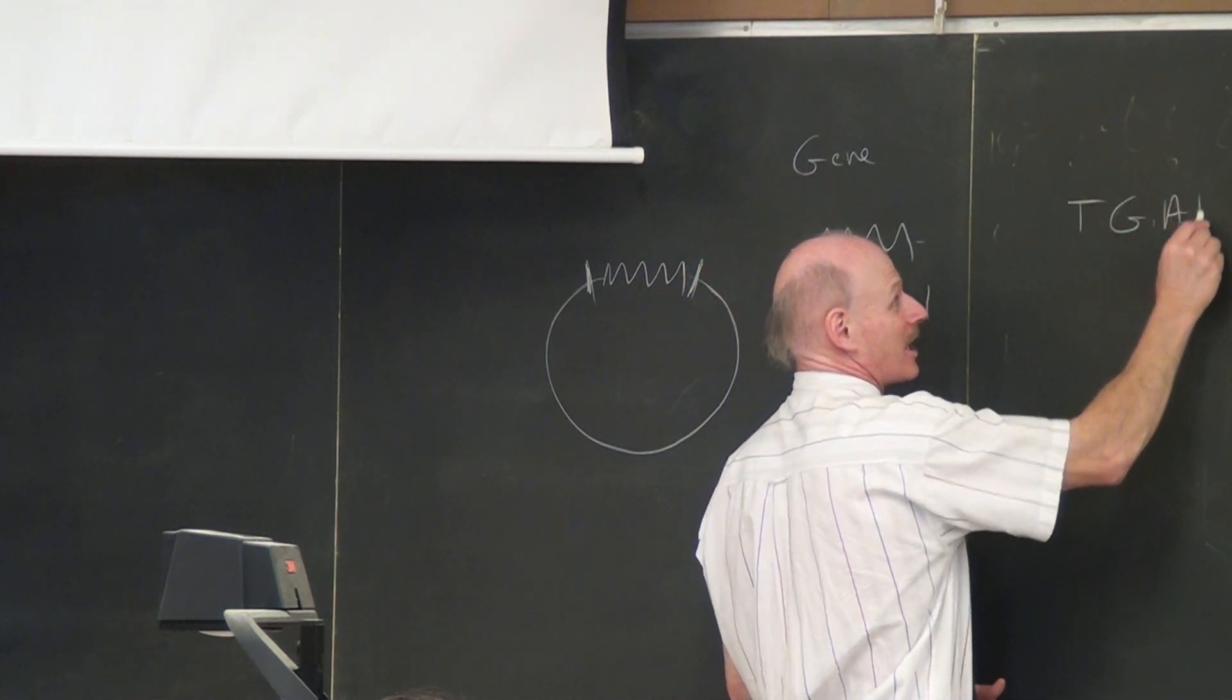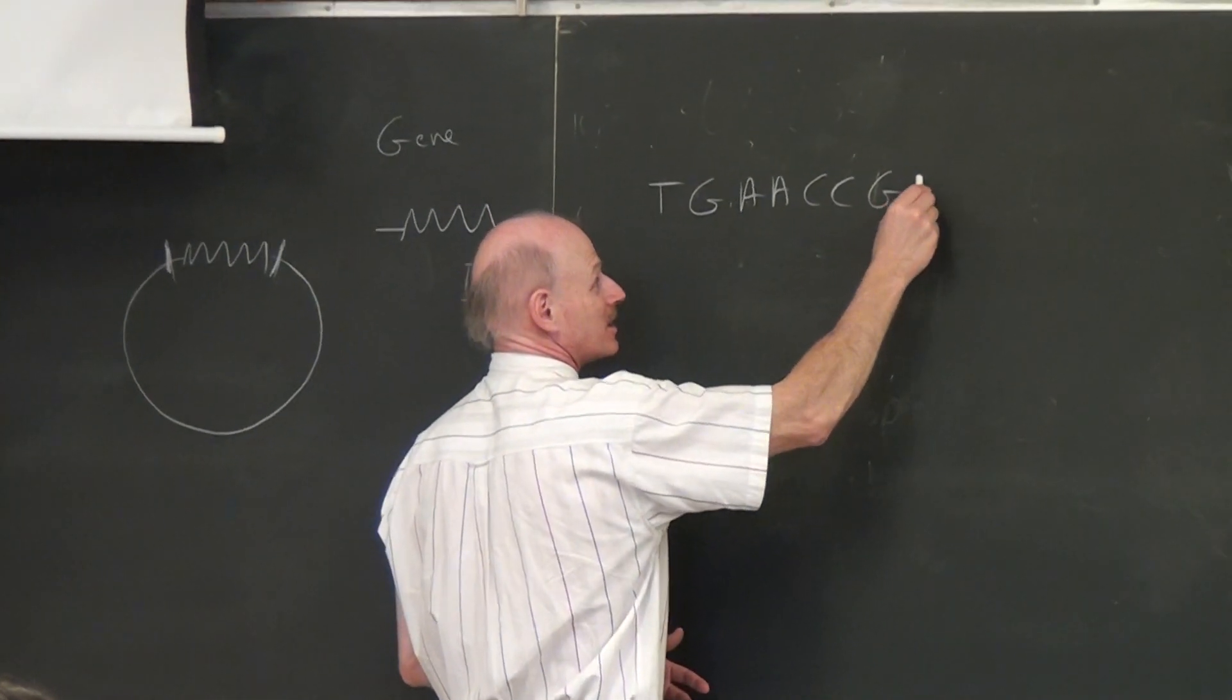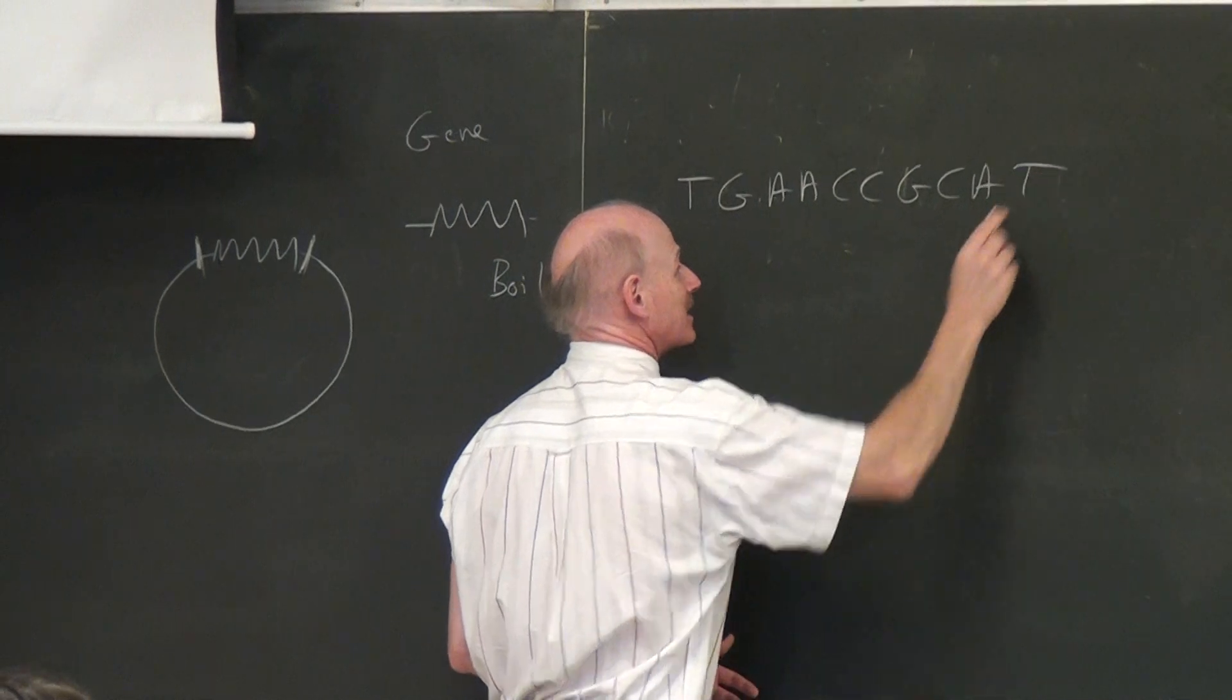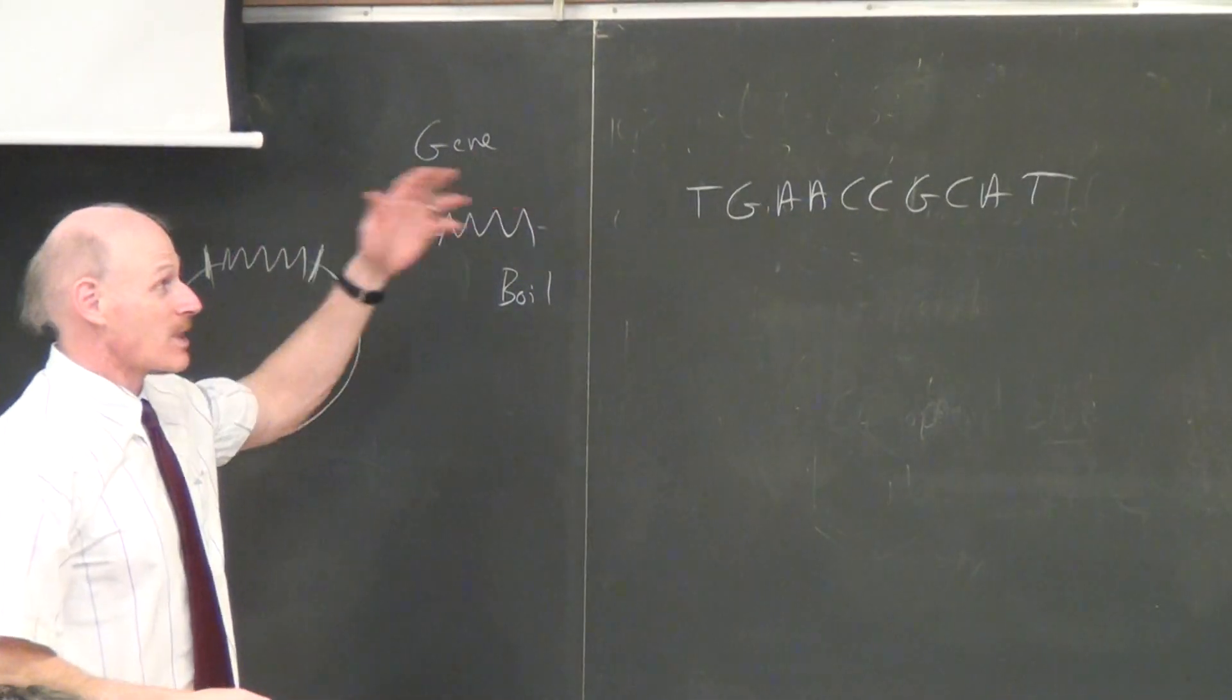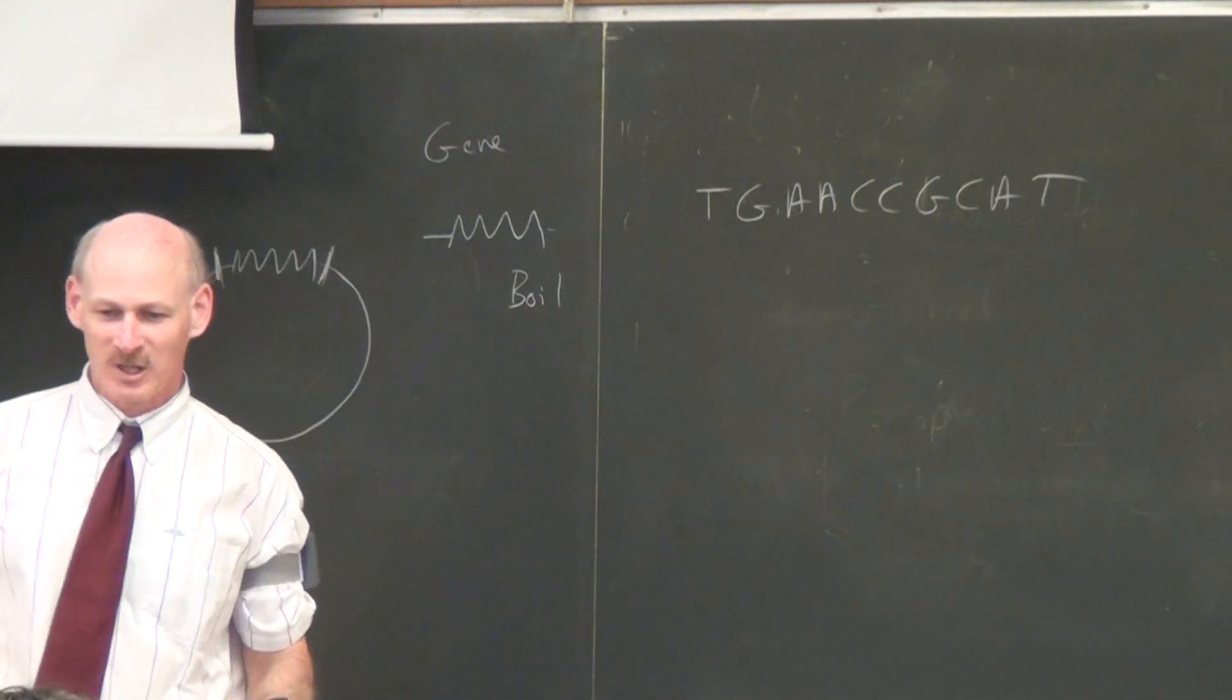Let's just say that one of the strands has a sequence like this: T, G, A, A, and I'm just making this up, C, C, G, C, A, T, like that. Now we don't know that yet, but that's one of our strands. We don't know what its sequence is.